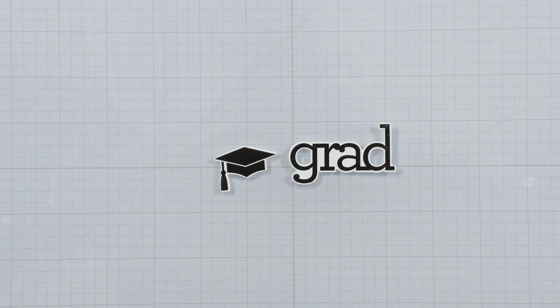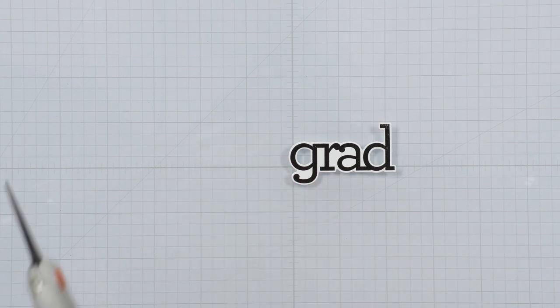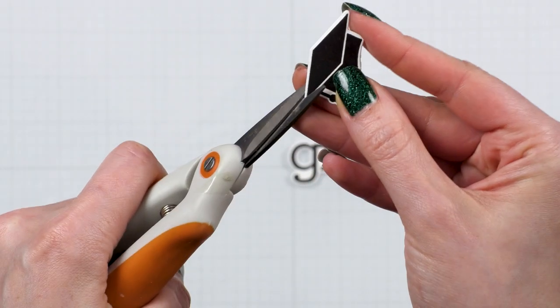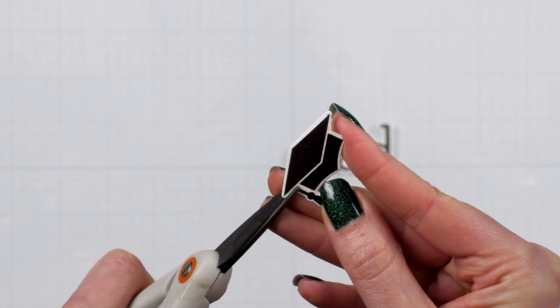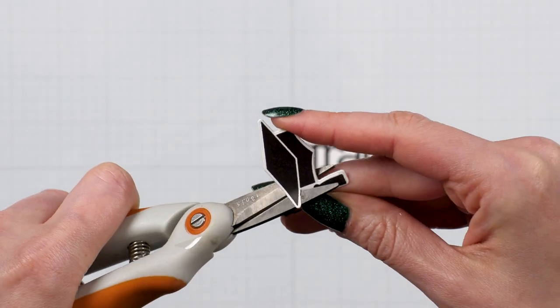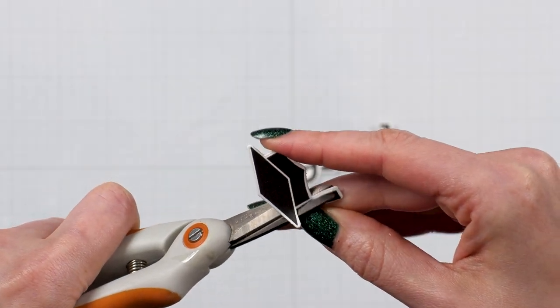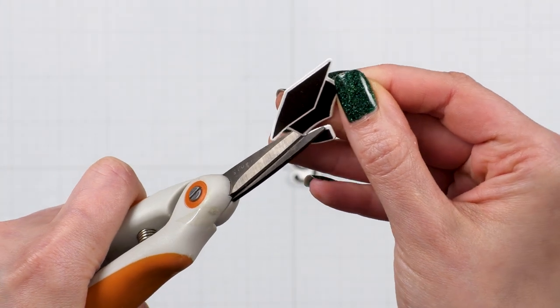I cut the cap out using a coordinating die and that's where the altering started. First I used scissors and I cut the tassel off. In this image there is a gap between the tassel and a cap, so that allows for a very clean cut.